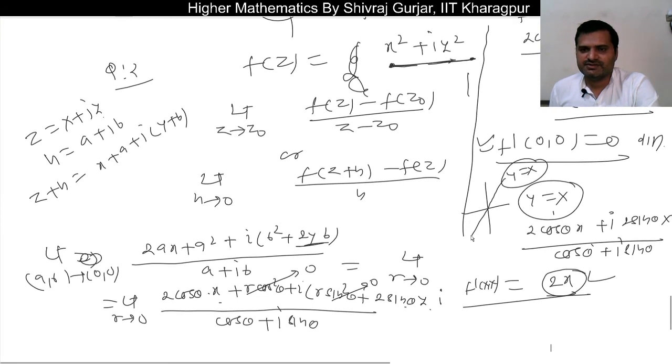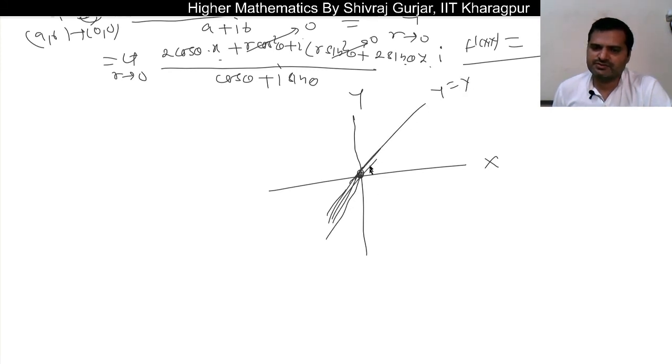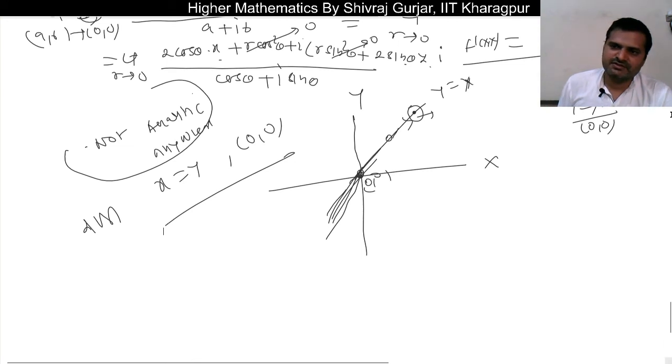Now we see the analyticity. What we have known from this function is that it is differentiable along the line y = x and at 0, 0. But even along y = x, if we take this point and see it, there are points outside y = x where it is not differentiable. So this function is differentiable at x equals y and origin, but it is not analytic anywhere. So I hope the differentiability and analytic concept is clear.